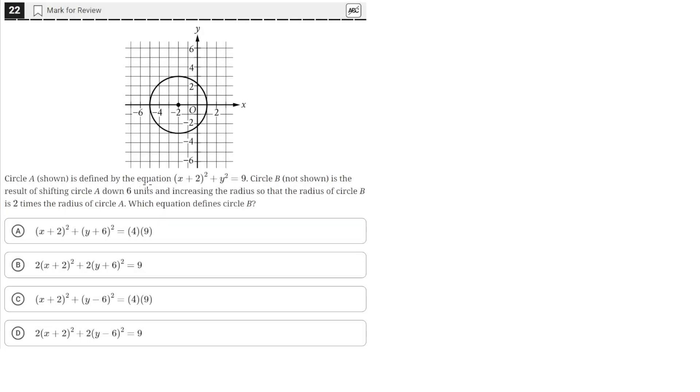Circle A shown is defined by the equation x plus 2 squared plus y squared equals 9. Circle B, not shown, is the result of shifting circle A down 6 units and increasing the radius so that the radius of circle B is 2 times more than the radius of circle A. Which equation defines circle B?